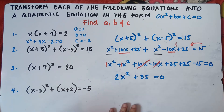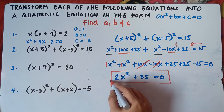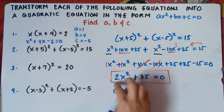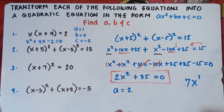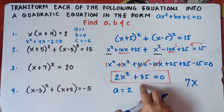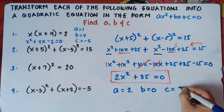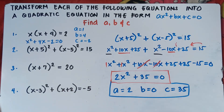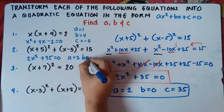So 2x² + 35 = 0 is our equation. The value of A, beside x², is 2. Do we have a value of B — a number with variable x with exponent of 1? No, we don't have a linear term. Therefore B = 0. If you don't have the value of B, just put 0. And C, the constant, equals 35. So: A = 2, B = 0, C = 35.